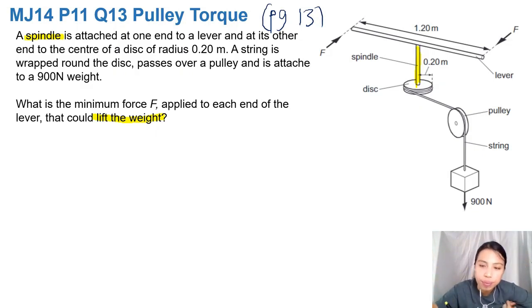Okay, first things first. This little block down here, 900 newtons. So there's going to be a tension in the string that will hold up the block. Means there is also a tension trying to pull the disc.